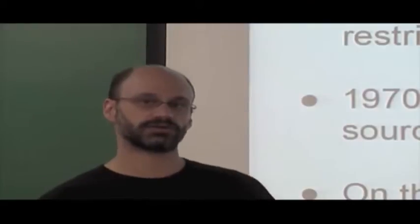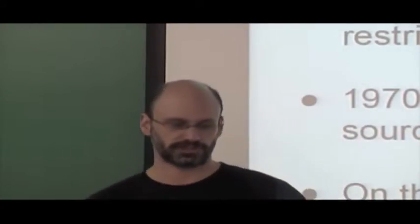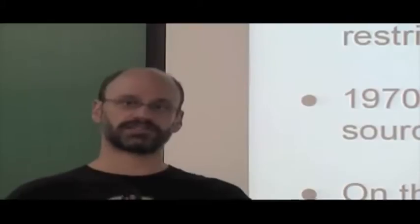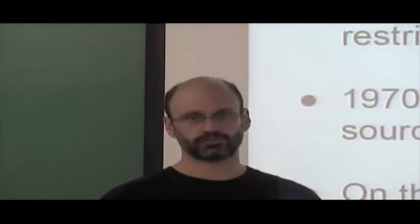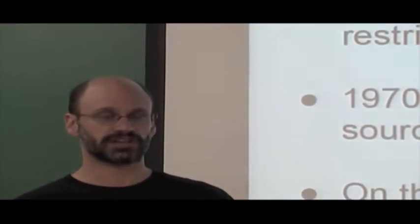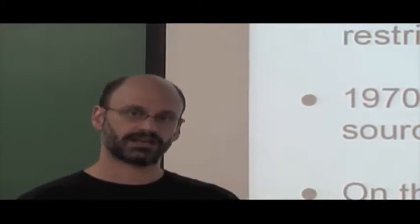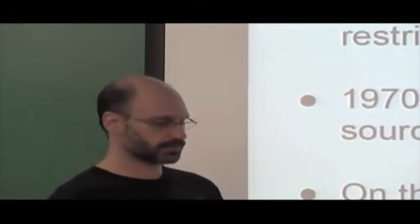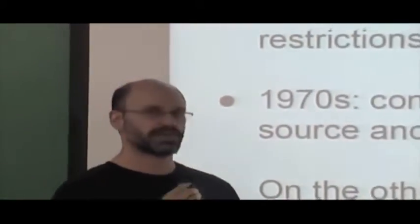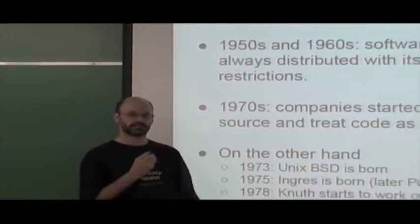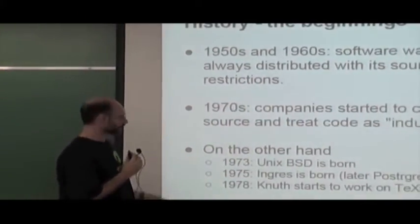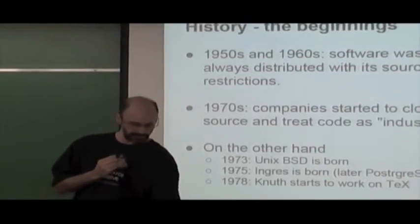In the 1970s, companies started to close their source and treat their code as an industrial secret. On the other hand, also in the 1970s, a lot of big open source projects started to form. For example, in 1973, Unix BSD was born; in 1975, the Ingres database; in 1978, Knuth started work on the TeX package.